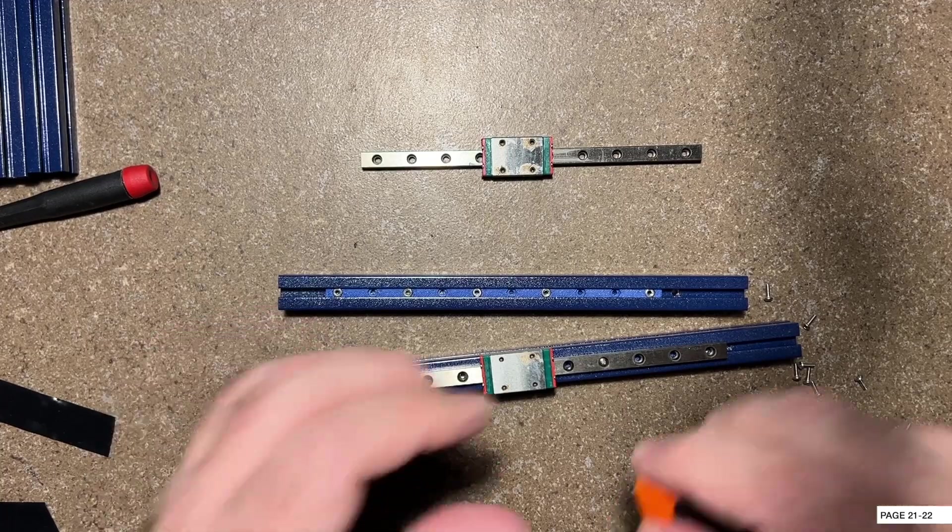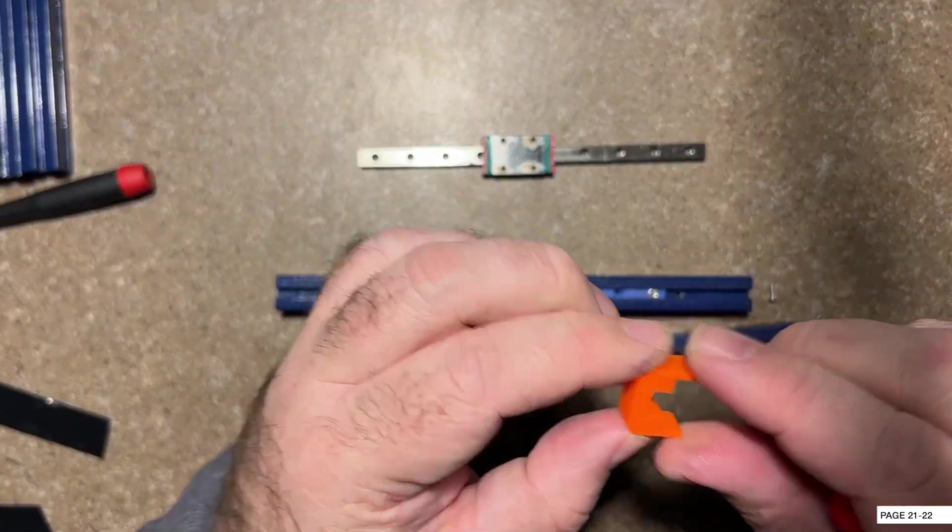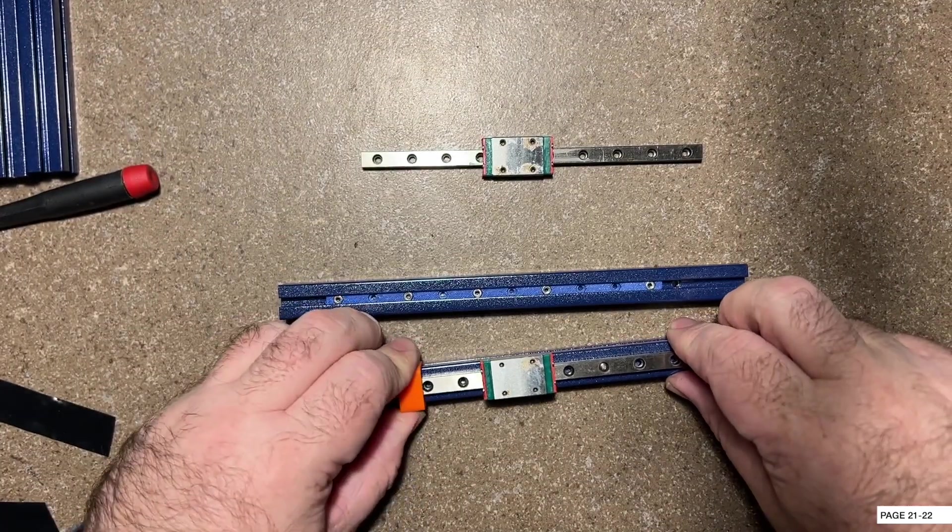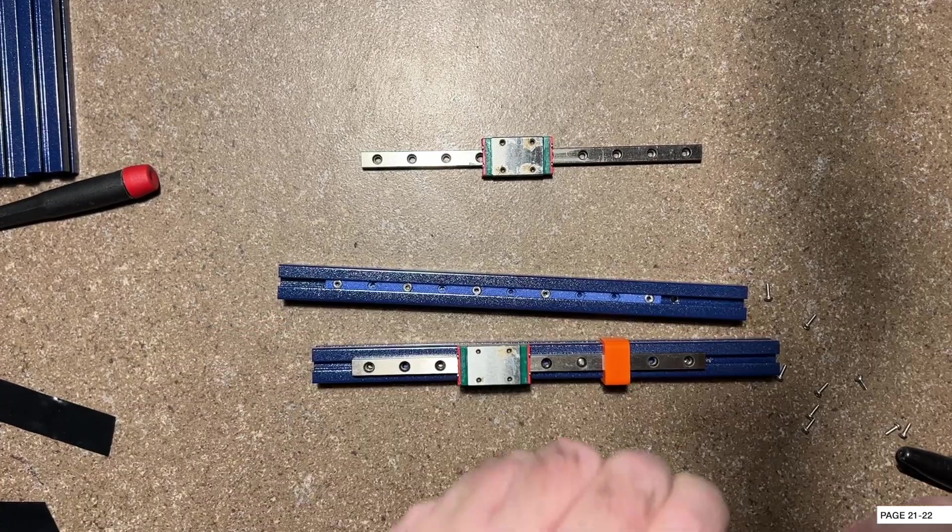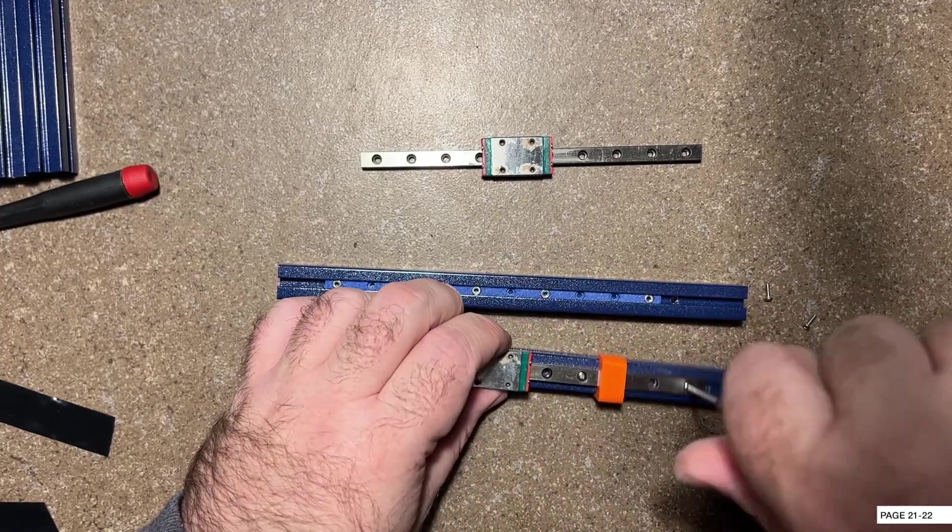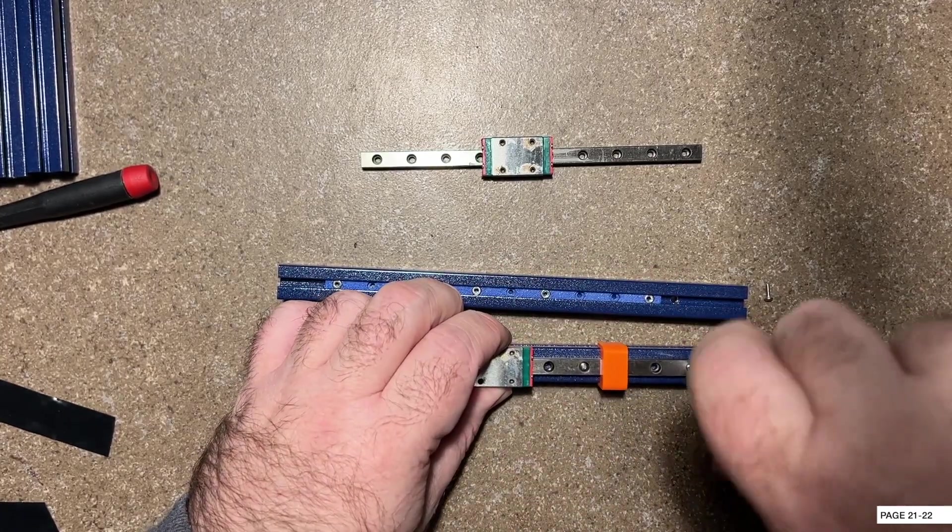We're also going to be using this little guy here. This is the rail centering tool. You can just kind of stick that on there and make sure that your rail stays centered. Just remember where you put your screws. It should be every other hole with two on the end.